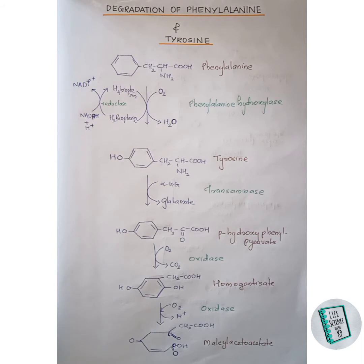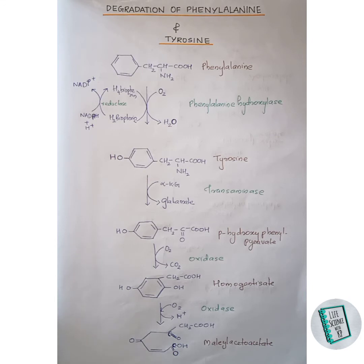Hello guys, welcome back to our video. Today we will be discussing the degradation of phenylalanine and tyrosine. The metabolism or degradation of phenylalanine and tyrosine are together — that is, the same. Phenylalanine is first converted to tyrosine, which is then further degraded to the end product.